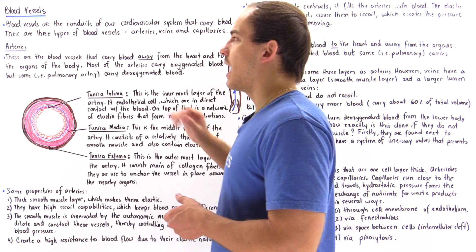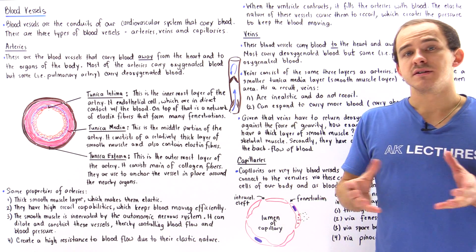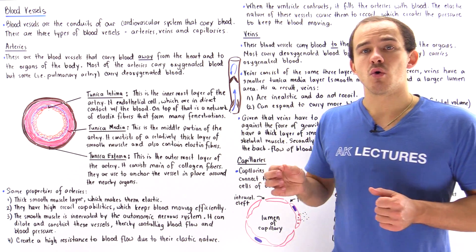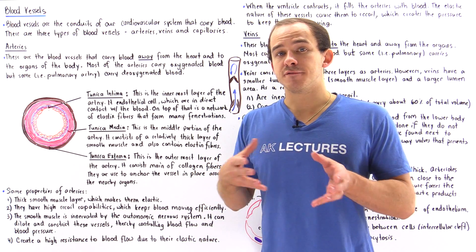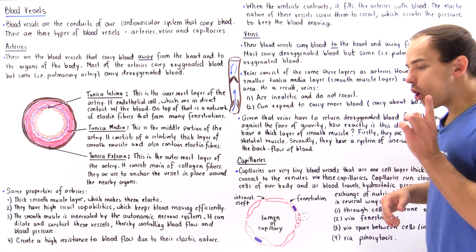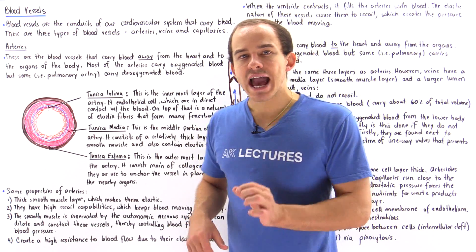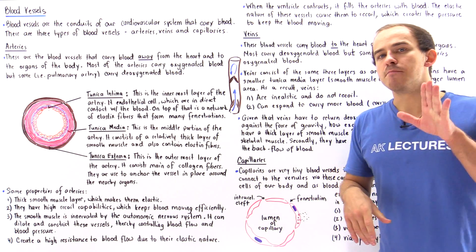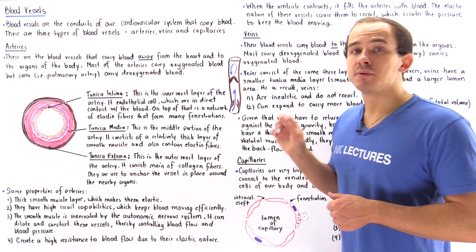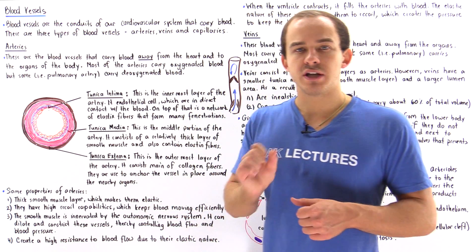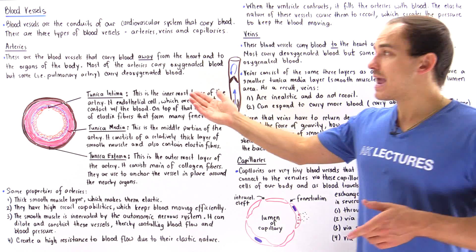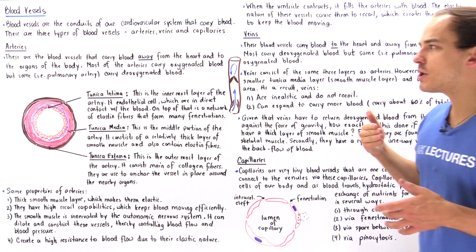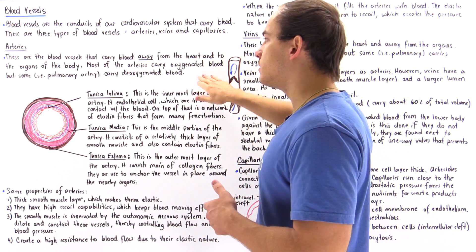Let's begin by focusing on our arteries. Arteries vary in size — the largest artery of our body is our aorta and the smallest is called an arteriole, with different sizes in between. By definition, an artery is a blood vessel that always carries blood away from the heart and to the cells, tissues and organs of our body. Most of the time arteries carry oxygenated blood, but sometimes, as in the case of the left and right pulmonary artery, they carry deoxygenated blood away from the heart to the left and right lung.